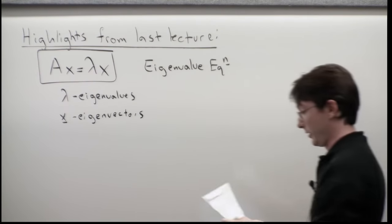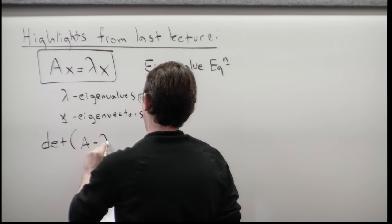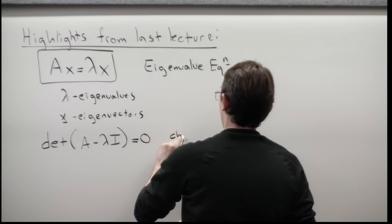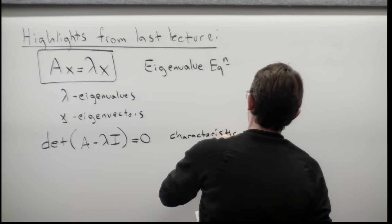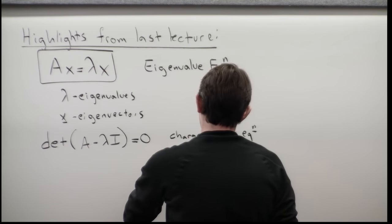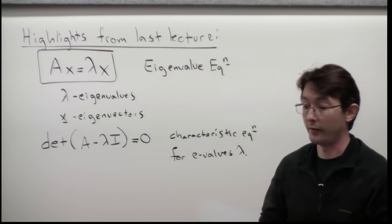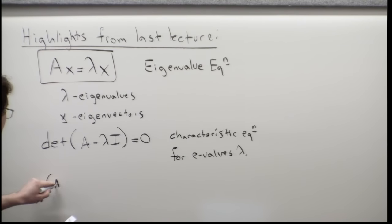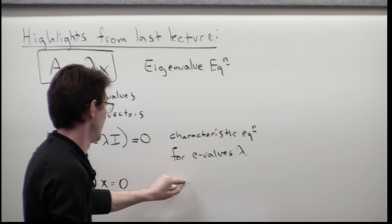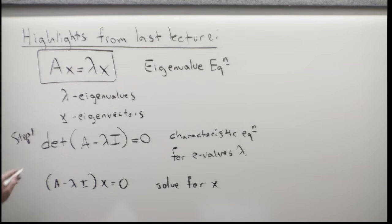The way that we find our eigenvalues is to look at the equation: determinant of A minus lambda I equals zero. This is the characteristic equation. We solve this equation for lambda, which gives us eigenvalues. Then, once we have a set of eigenvalues lambda, we solve (A minus lambda I) times x equals zero to solve for x. This is step one, and that is step two.